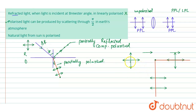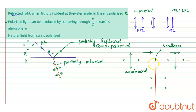Let us draw a diagram for the third statement. Unpolarized sunlight falls on a scatterer — such as an air molecule or dust particle in the Earth's atmosphere. These scatterers absorb the unpolarized light and re-emit it in all directions. The direction of propagation is the direction in which light falls on the scatterer.